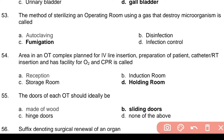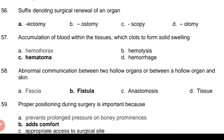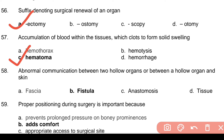Question 52: Cholecystectomy refers to surgical removal of — Answer: d. Gallbladder. Question 53: The method of sterilizing an operating room using a gas that destroys microorganisms — Answer: c. Fumigation. Question 54: Area in an OT complex planned for IV line insertion, preparation of patient, catheter and RT insertion, with facility for O2 and CPR — Answer: d. Holding room. Question 55: The dose of each OT should ideally be — Answer: b. Sliding dose. Question 56: Suffix denoting surgical removal of an organ — Answer: a. -ectomy. Question 57: Accumulation of blood within the tissues which clots to form a solid swelling — Answer: c. Hematoma.